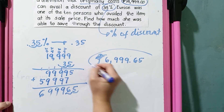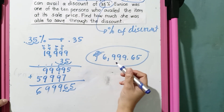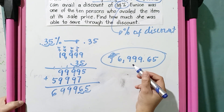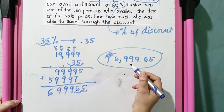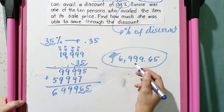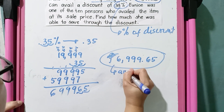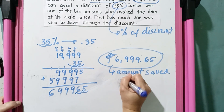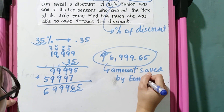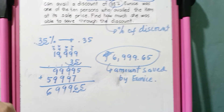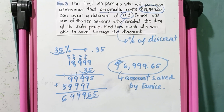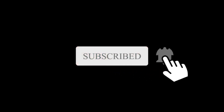This is the amount of discount — that's 35% of 19,999 — which is also the amount Eunice was able to save through the discount. Thank you for listening. I hope you learned something and see you next time.